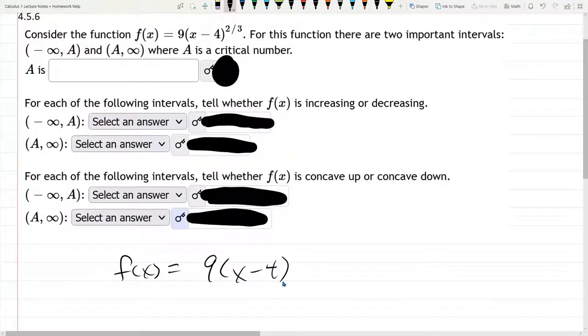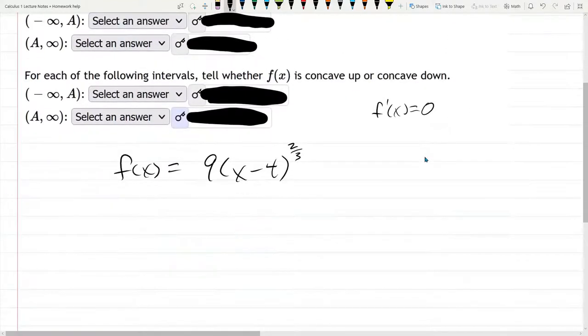And of course, every question in calculus 1, you need to take a derivative. Why are we taking a derivative? Because we need to get a critical number here, a critical point. So we need to know when is f prime of x equal to 0. So we're taking the derivative, we have two-thirds times 9, x minus 4, two-thirds minus 1, we're dropping the power by 1, so that's negative one-third.